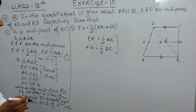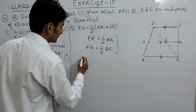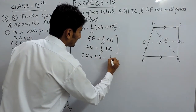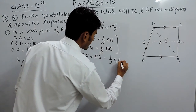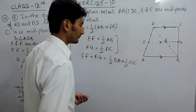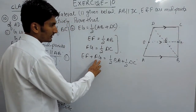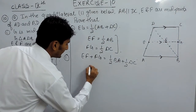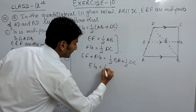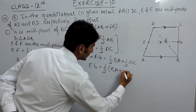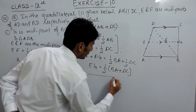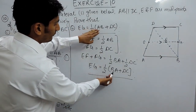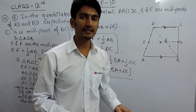Adding the two equations: on the left-hand side we get EF plus FG, and on the right-hand side we get half of AB plus half of DC. EF plus FG can be written as EG, since F lies between E and G on the same line. Taking half as common, we get EG equals half of AB plus DC. This is how we prove the second part.